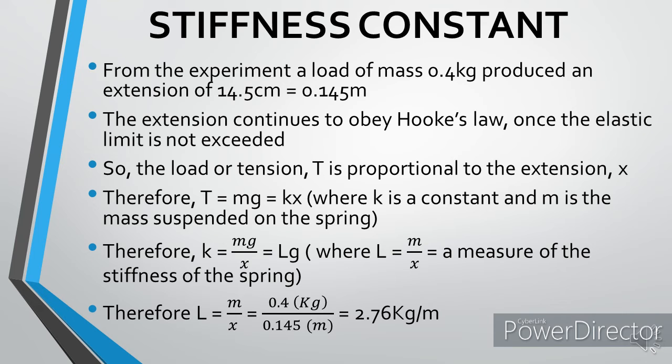So with that in mind, the tension or the load is equal to kx, and I made k subject of formula, and then I had Lg, which is the same thing as mg over x. You can see the procedure and all the theory is well documented for you to understand. Now the L there represents my stiffness constant, which is a ratio of the mass per unit extension. So if I deduce the stiffness constant L using the mass 0.4 kg and the extension produced as a result of that mass being hung on the spiral spring, which is 0.145m, the value of my stiffness constant is 2.76 kg per meter.